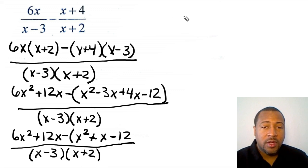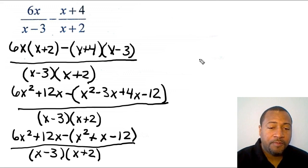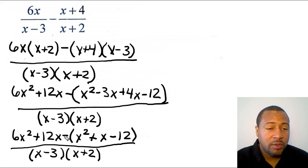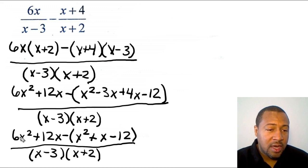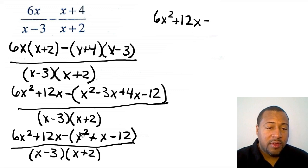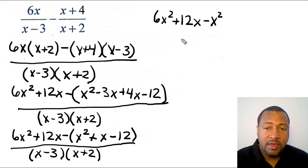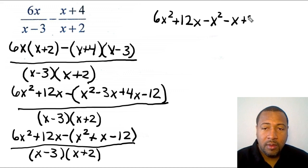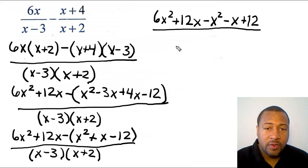Now I keep working on the right-hand side and distribute the negative to each term. I bring over 6x² plus 12x, since there's nothing we can do with those yet. Then: negative times x² gives negative x²; negative times negative x gives negative x; and negative times negative 12 gives positive 12. I bring the denominator (x − 3)(x + 2) over as well.